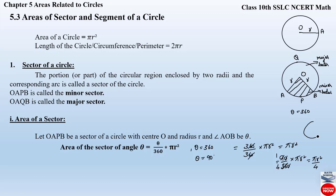That is, when theta is equal to 90 degrees, the area of this quadrant is nothing but πr²/4. So depending upon the value of theta, this is how we can find out the area of a sector of angle theta. You have to remember this formula: area of a sector of angle theta equals θ/360 × πr².